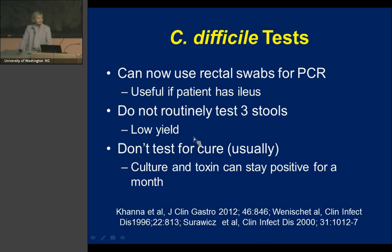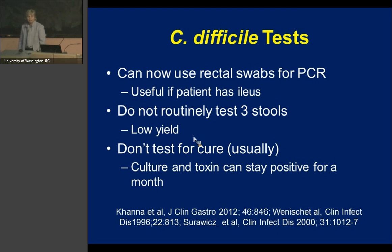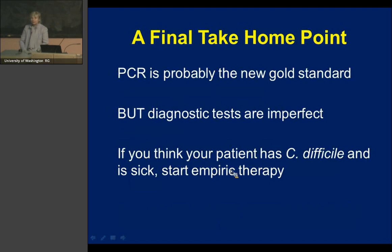Rectal swabs can be useful for PCR if your patient has an ileus and is not producing any stool. Don't routinely test three stools — the yield of a repeat is very, very low; one stool test is all you need. Don't test for cure, because culture and toxin can stay positive. If your patient doesn't have diarrhea, don't ask. If your patient is sick and you think they might have C. diff, start empiric therapy — there is no harm in that. PCR will likely become the new gold standard, but even PCR is not perfect.